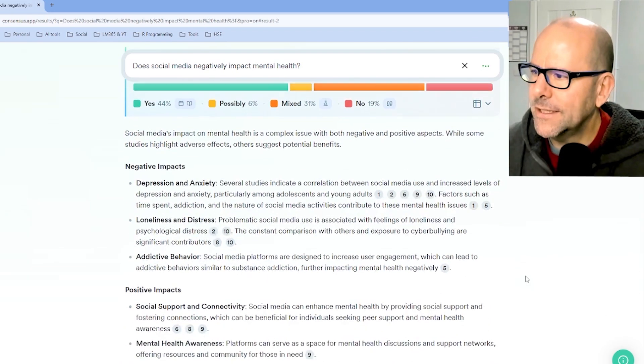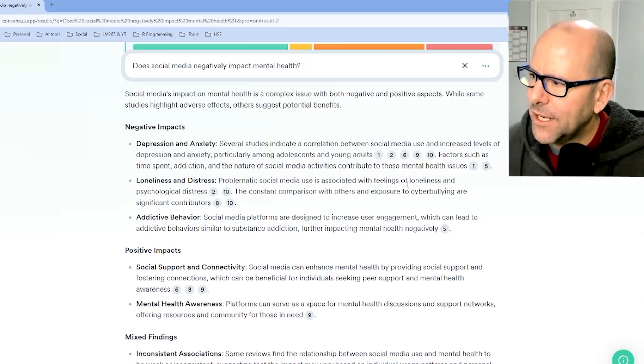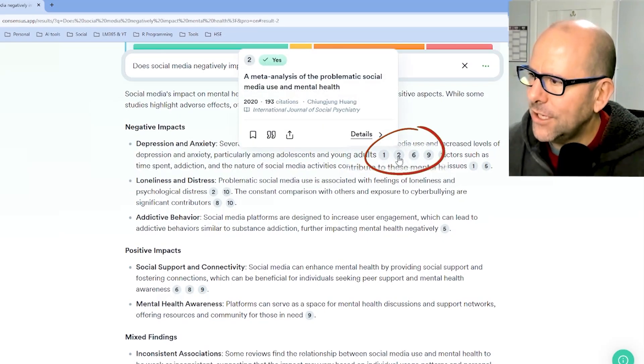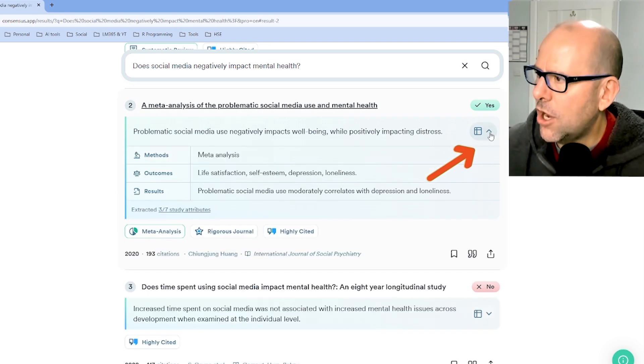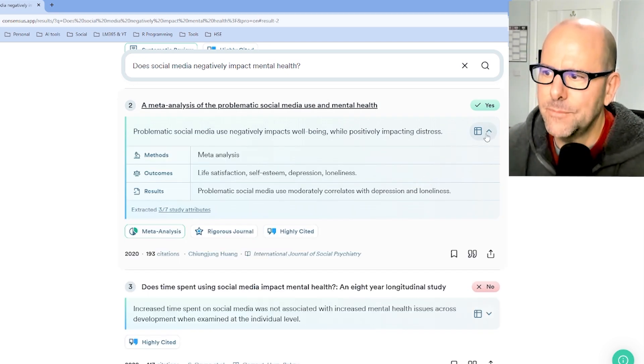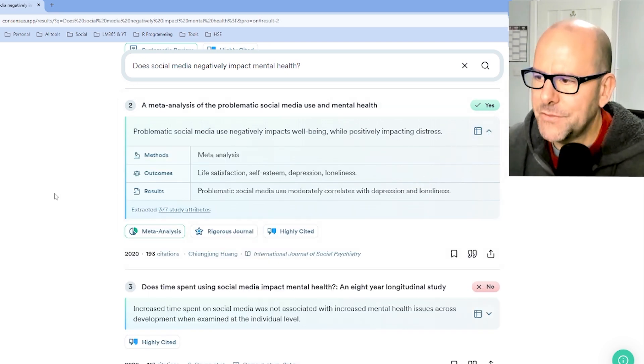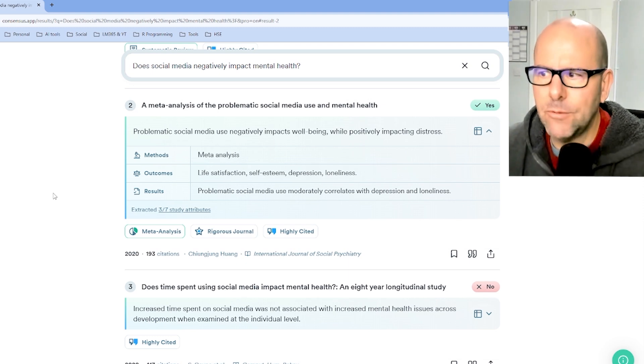It also provides you with a narrative or a little literature review on the subject and you can click on any of the references and it'll take you down to information about that paper. And once you're at the paper, you can click here, ask for more information about the methods, outcomes, results, the type of study that was done, the rigor of the journal that was published in, the number of citations and more.